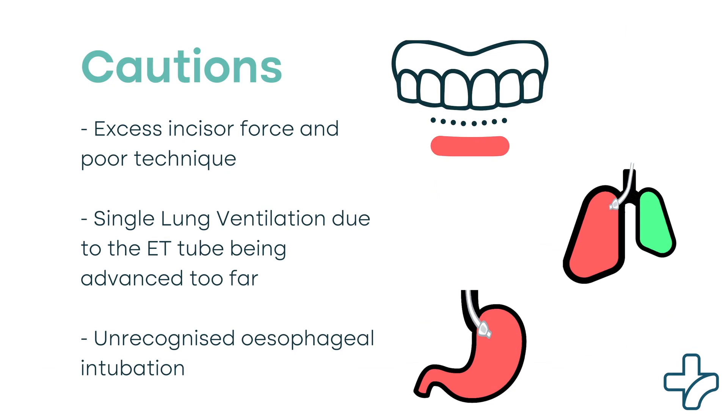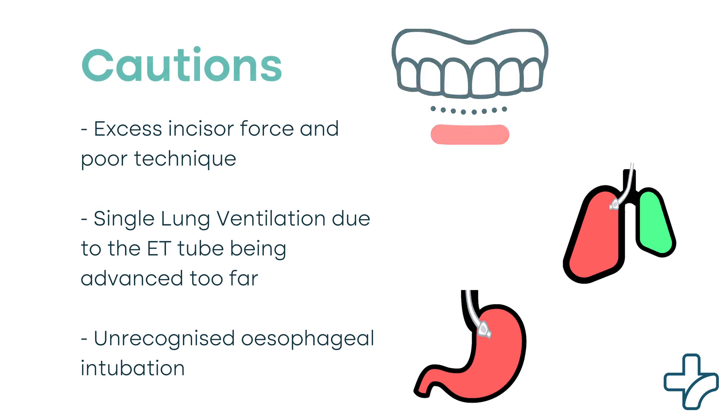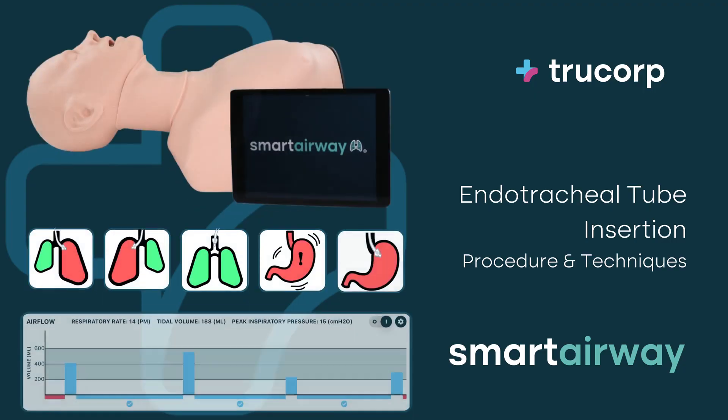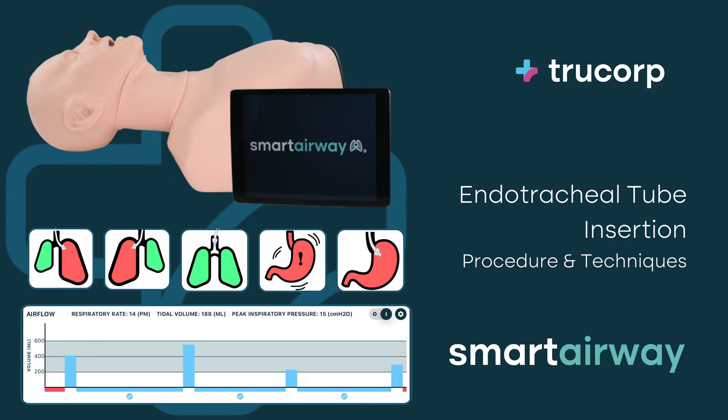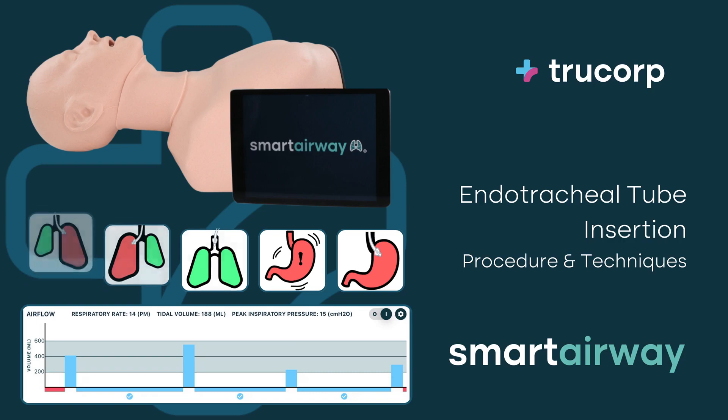Unrecognized esophageal rather than tracheal intubation is a fatal complication. Smart Airway will identify and give feedback on successful placement of the ET tube and initial ventilations, and identify complications such as unilateral main bronchus intubation and esophageal intubation.